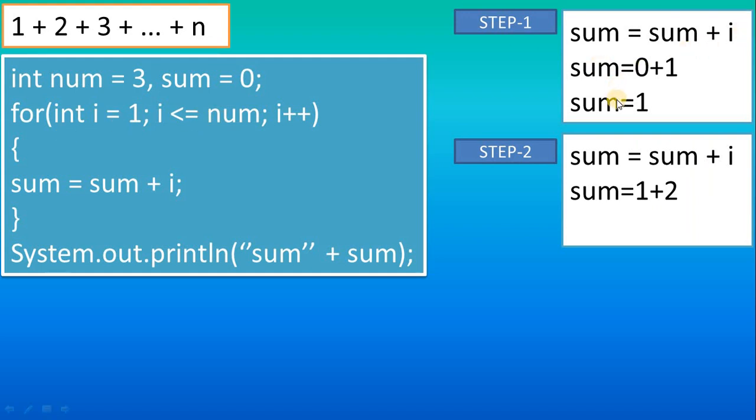We are in the second iteration, step 2. Our logic is the same, but here sum = 1 + 2 because our sum value changed to 1, and we are in the second iteration where i is 2.